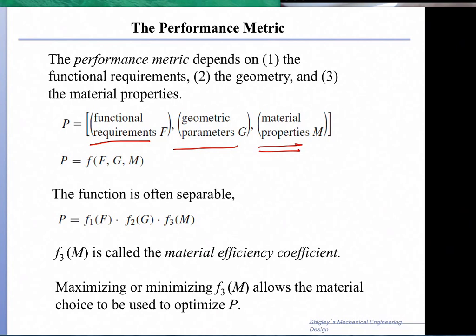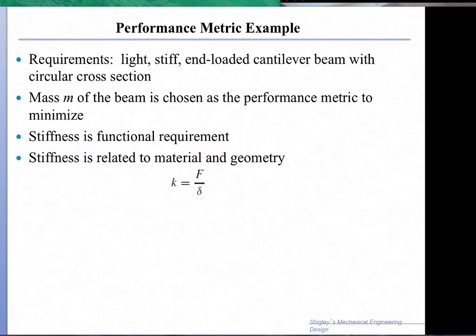We focus on the material properties in this function F3, which is called the material efficiency coefficient. For the case of uniaxial tension, we found that the material coefficient was obtained as a process of maximization of E over rho, and we were able to look at it with a power of one.